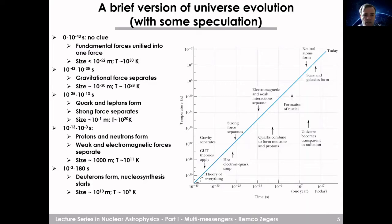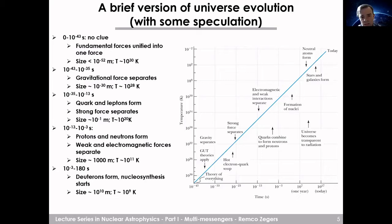Since that beginning, the universe starts to expand. The size increases from 10 to the minus 30 meters up to larger distances, and the temperature drops from 10 to the 30th Kelvin down to about 10 to the 9th Kelvin after a few hundred seconds. Initially, the gravitational force separates from the other forces. Shortly thereafter, quarks and leptons — the fundamental building blocks of matter — start to come. Then protons and neutrons start to form, and the weak and electromagnetic forces separate. At that time, the universe is maybe about 1000 meters in size.